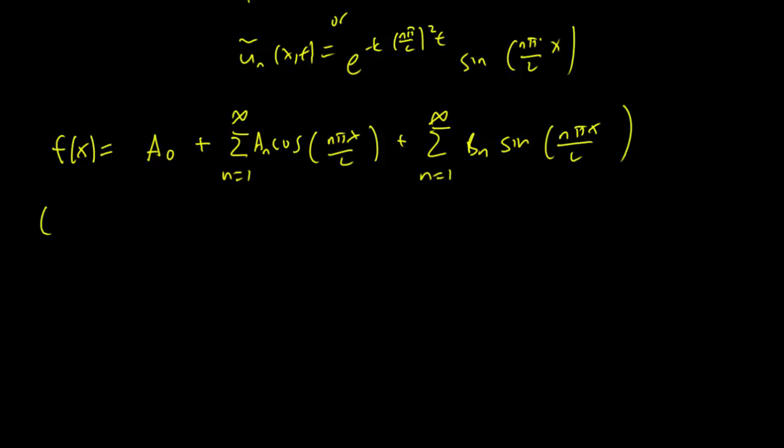And again, this is also another version of Fourier's theorem. There are several versions of this theorem obviously, and this is the third version we're talking about. And it turns out that the formulae for finding A₀, A_n, and B_n are similar to the previous cases.